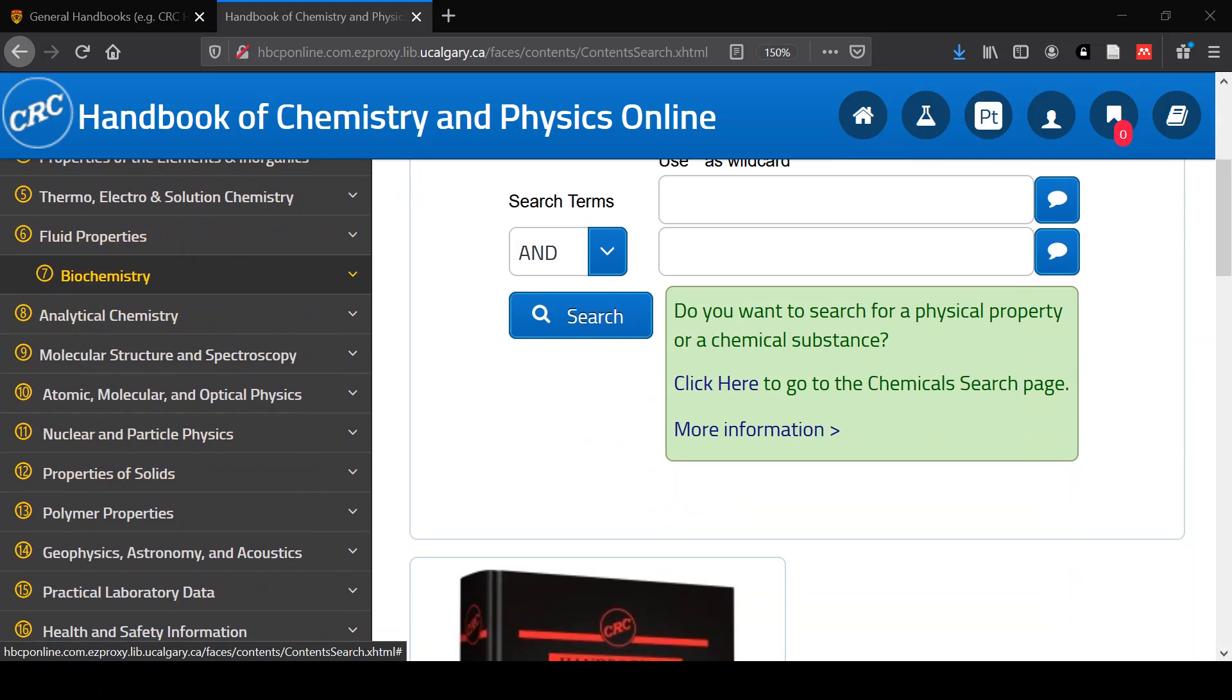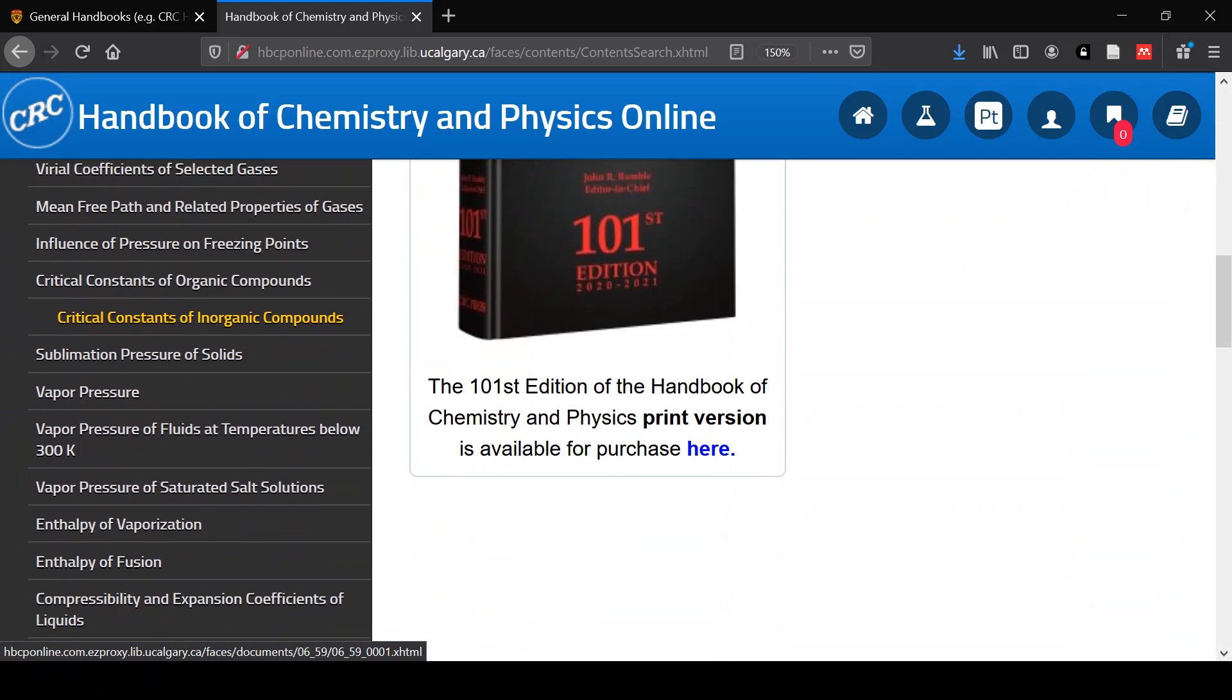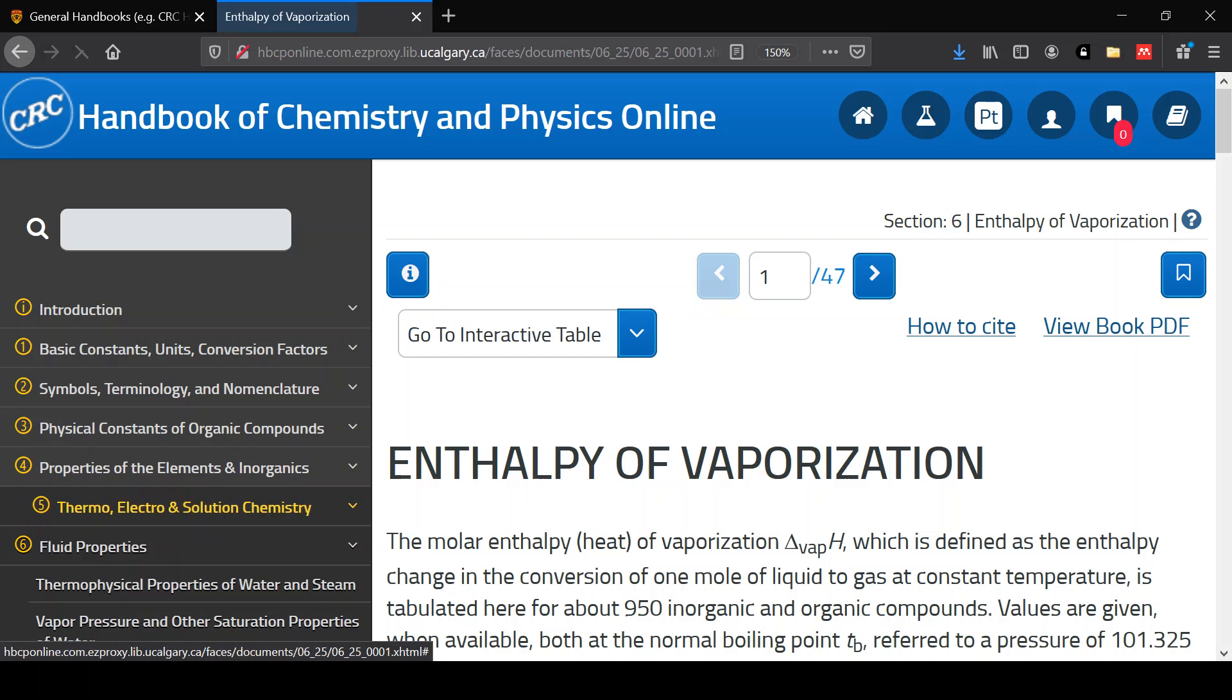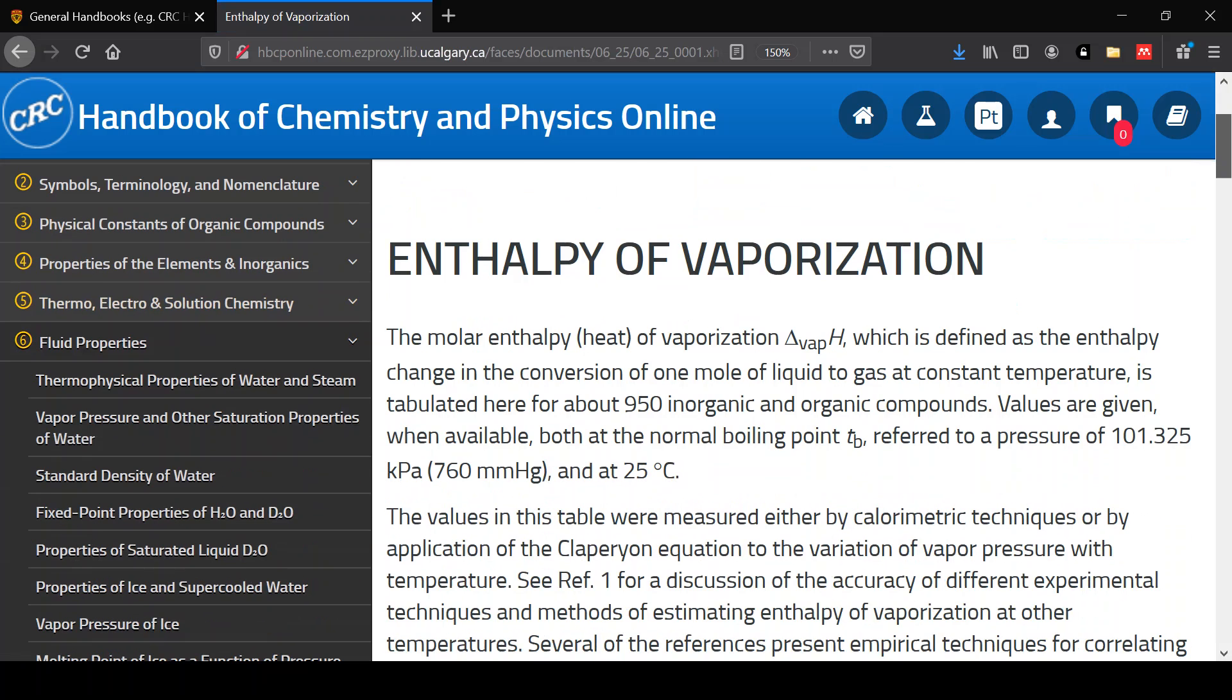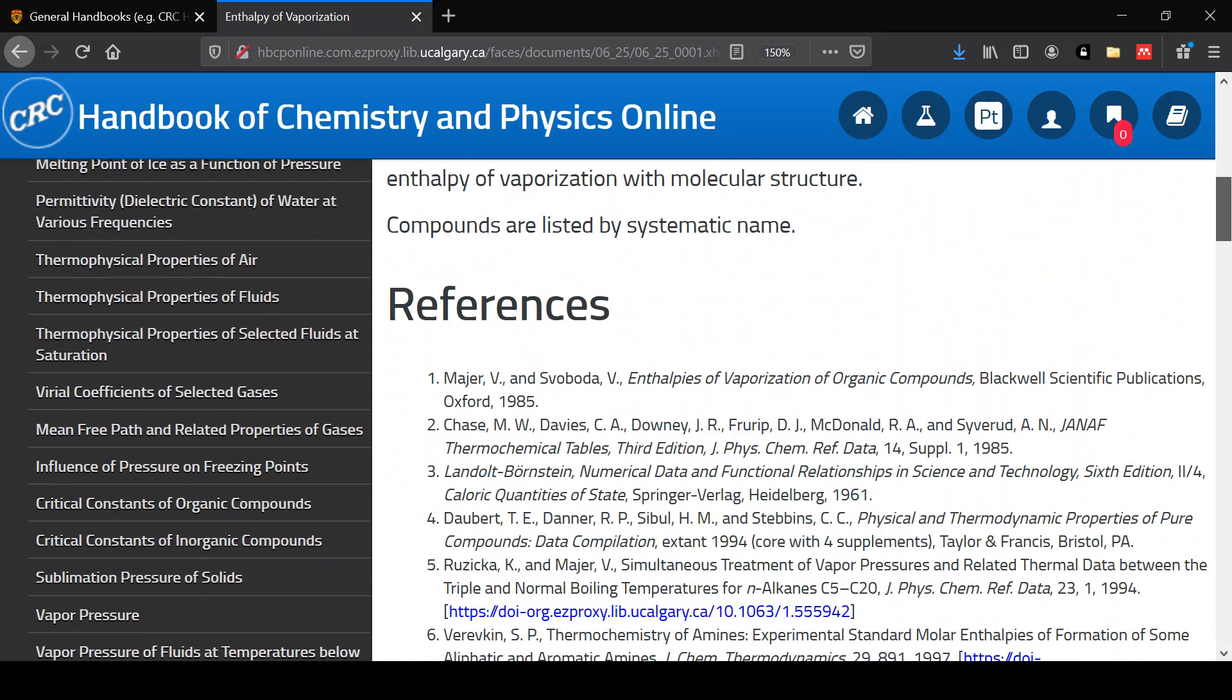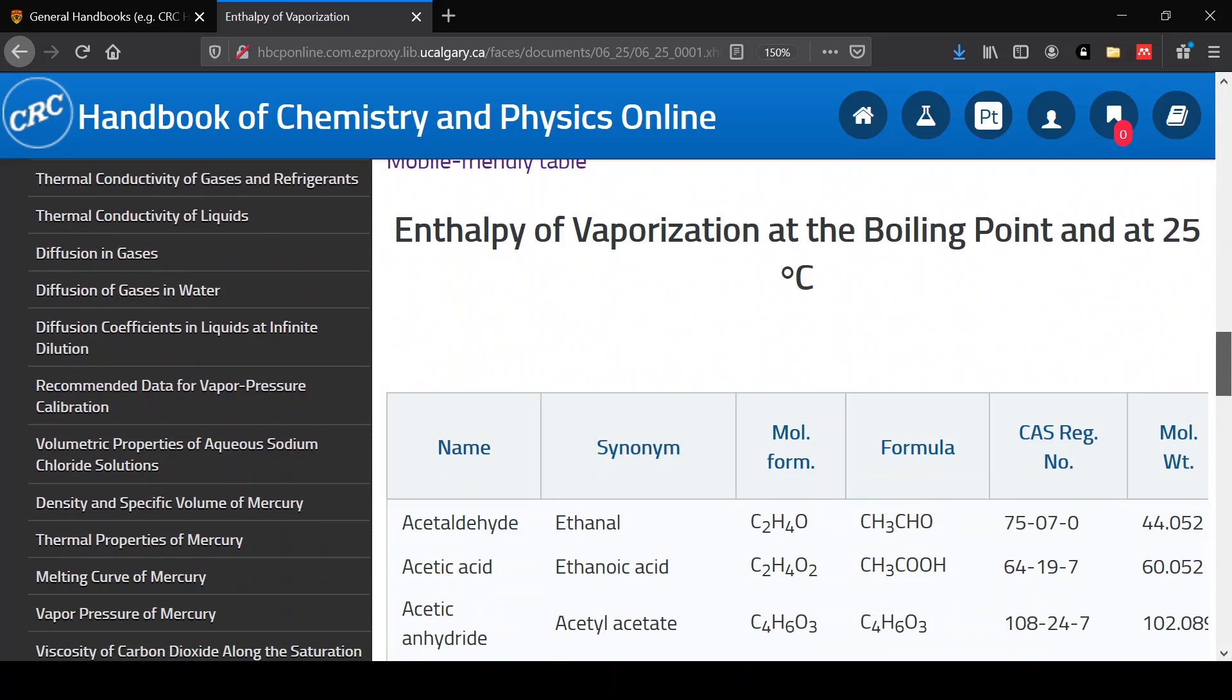So for example, something like the enthalpy of vaporization. If you click on that section, you're brought to the first page of the chapter or subsection, and you'll see information about that property. Further down are the references where that information came from, and then the data table itself.